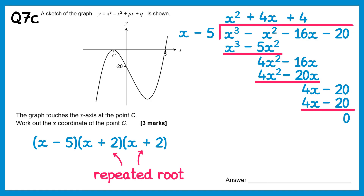Notice we get a repeated root here with x plus 2 coming up twice. If we were to solve the equation f of x equals 0, we would get the solutions 5 (which we know) and negative 2. This means the point c is at negative 2, 0. We were only asked for the x coordinate of point c, so it's negative 2.